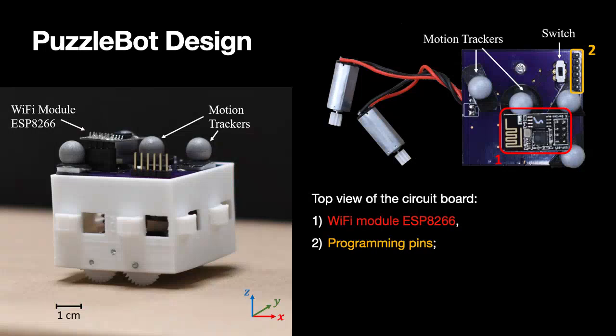The orange ones are the programming pins for the computer to load programs to the robot. This robot has onboard power, onboard actuation, and onboard computation. However, it does not have onboard sensing. The sensing relies on the VICON system for the feedback of the poses of the robot.